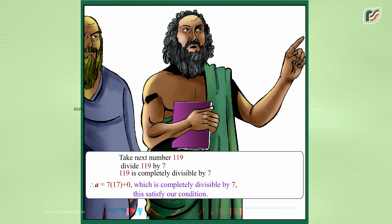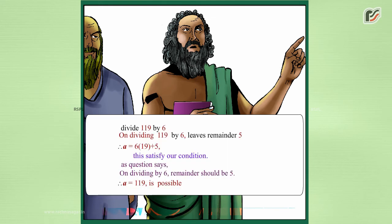Take the next number, 119. Dividing 119 by 7: 119 is completely divisible by 7, giving a equals 7 times 17 plus 0. This satisfies our condition. Dividing 119 by 6 leaves remainder 5. Therefore a equals 6 times 19 plus 5, which also satisfies our condition, as the question says the remainder on division by 6 should be 5. Therefore a equals 119 is possible.